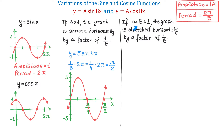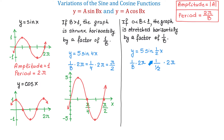Now, if b is a number between 0 and 1, the graph is stretched horizontally by a factor of 1 over b. For example, let's have the function y equals 5 sine of one-half x. In this function b is one-half, which is between 0 and 1. To find the period we use 2 pi over b, replacing b with 1 over 2. Then 1 divided by 1 over 2 equals 2, and 2 times 2 pi makes 4 pi. So the period of this function is 4 pi.